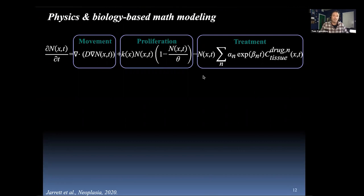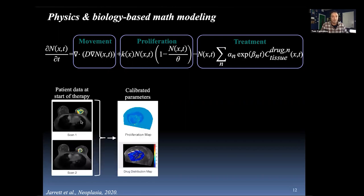We use imaging data to populate the parameters in this model. Contrast-enhanced MRI data gives an estimate of how drugs are being delivered, and diffusion-weighted MRI data gives an estimate of proliferation. We can also segment tissue types — fibroglandular tissue, adipose tissue, and tumor itself — assigning different mechanical properties that describe how tissue moves. We take a patient at scan one before therapy and scan two early in therapy — one or two cycles in — and calibrate this model to those two data sets.